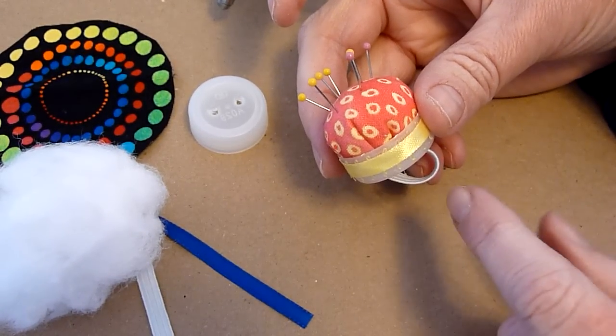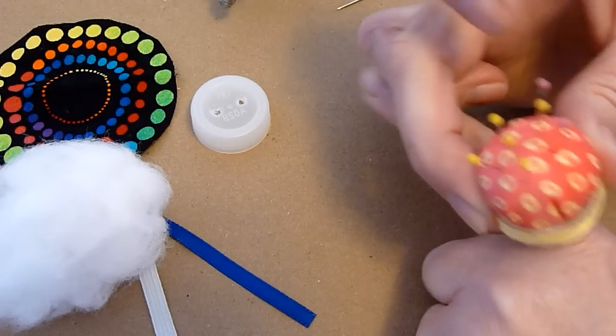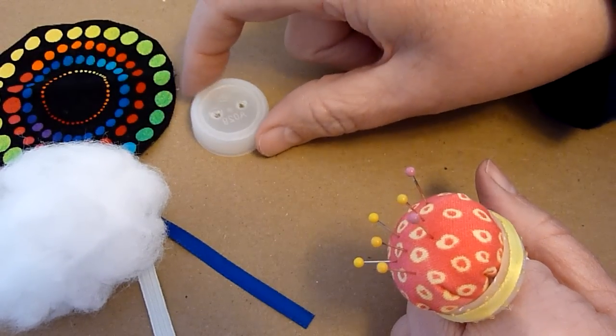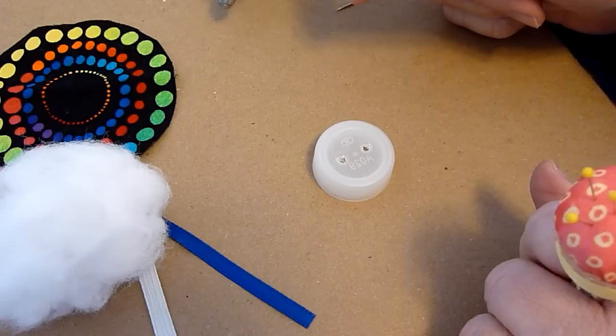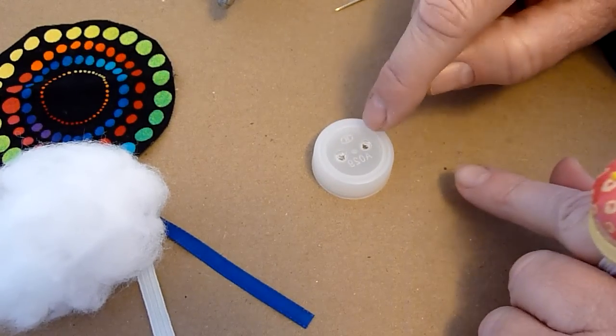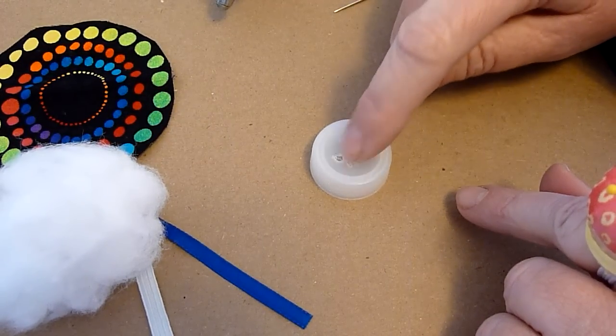Today we're making a pincushion for your finger. We're using a water bottle cap. I poked two holes in it just with a tip of some scissors.